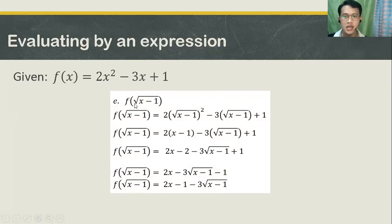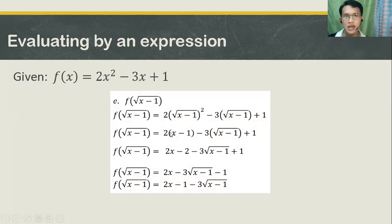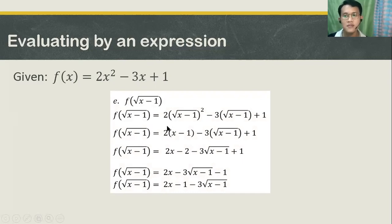Substituting the square root of x minus 1 to your x, you're going to get: your equation will turn into f of the quantity square root of x minus 1, is equal to 2 times the quantity of square root of x minus 1, squared, minus 3 times the quantity of the square root of x minus 1, plus 1.